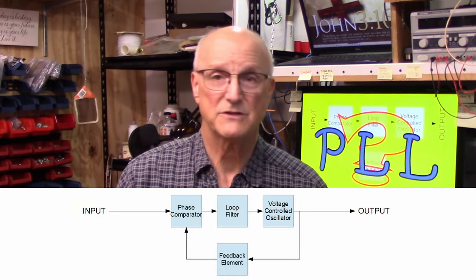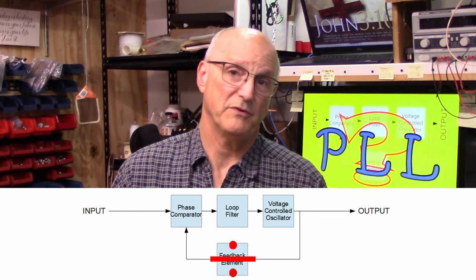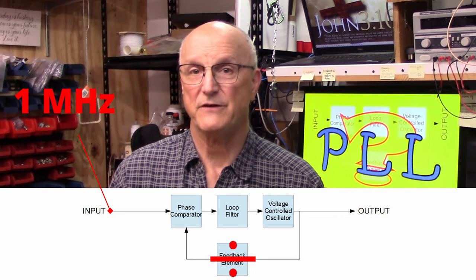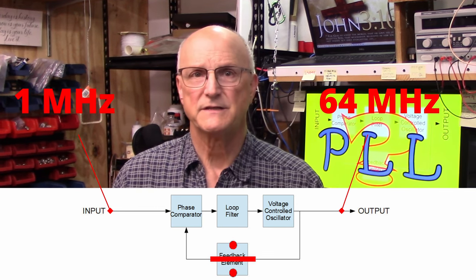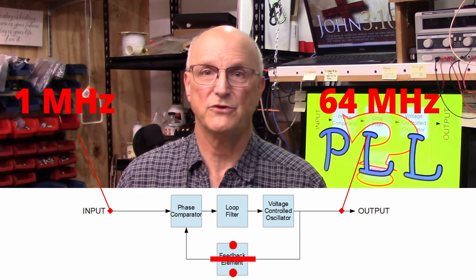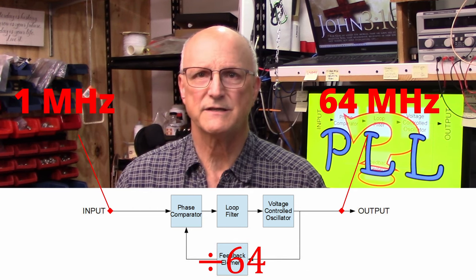The last major building block is the feedback path. Now, we have the feedback path. This could be something as simple as the output connected to the input of the phase detector. However, this is often not the case. Very often, this consists of some sort of frequency divider. Thus, the output frequency would be some multiple of the reference frequency. We could have a reference frequency of 1 MHz and the PLL output frequency of 64 MHz. The 64 MHz output is divided down to 1 MHz to be applied to the input of the phase detector using a divide by 64 divider.